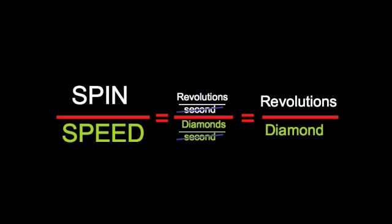The spin-to-speed ratio is what most players mean when they talk about the amount of spin. If you hit with a certain offset and just hit harder, you increase the spin and the speed proportionally by the same amount, and you don't change the spin-to-speed ratio. If you want to change the spin-to-speed ratio, you have to increase the spin without a commensurate increase in speed, such as by hitting further out on the ball.